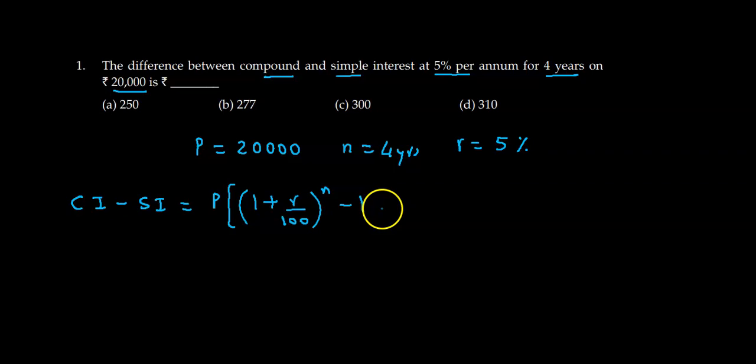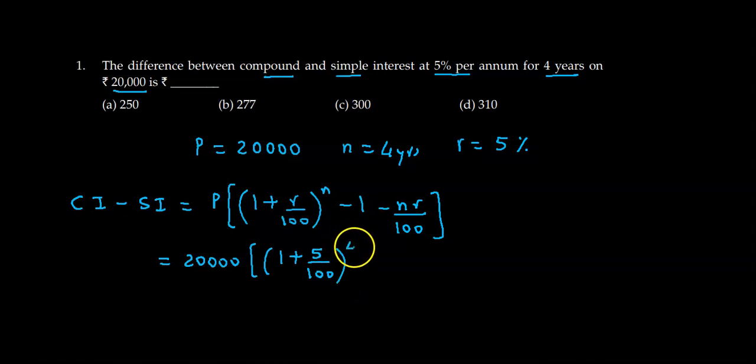So substituting these values, this becomes 20,000 into (1 plus rate is 5%, so 5 upon 100) raised to 4 minus 1, minus N is 4, rate is 5 upon 100.